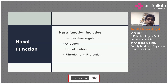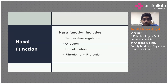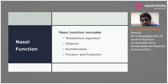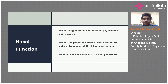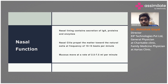Nasal function includes temperature regulation, olfaction, humidification, filtration, and protection. The nasal lining contains secretions of IgA, proteins, and enzymes. Nasal cilia beat at a frequency of 10 to 15 beats per minute, and the mucus generated moves at a rate of 2.5 to 7.5 ml per minute.